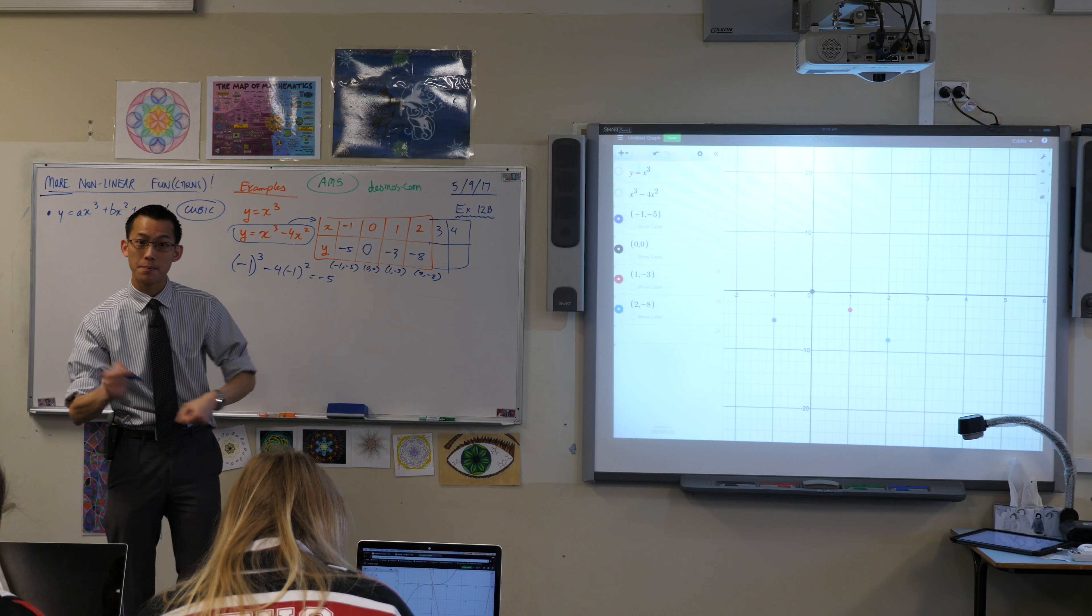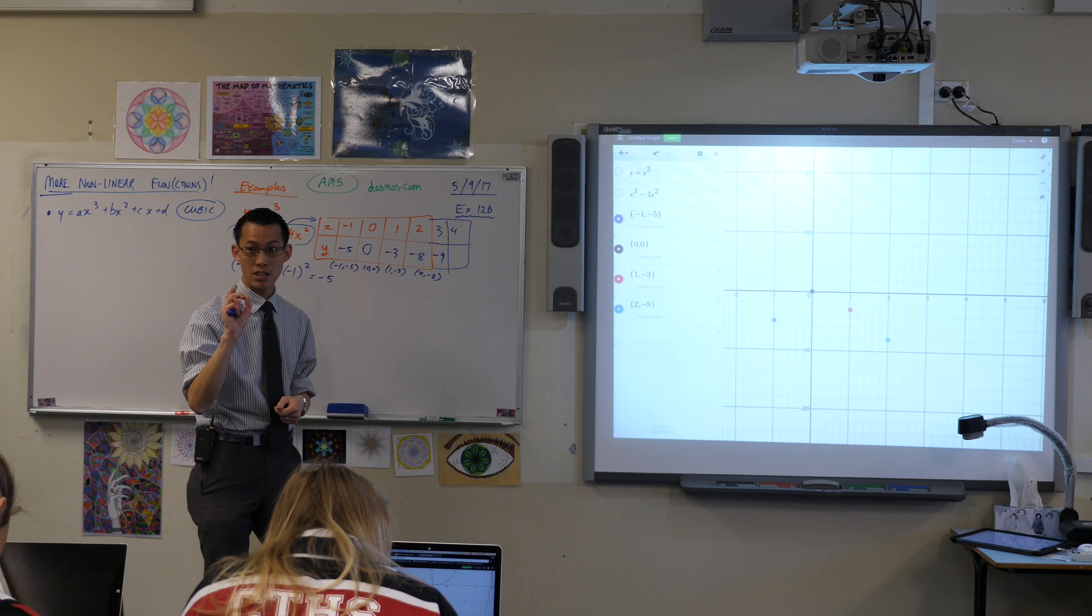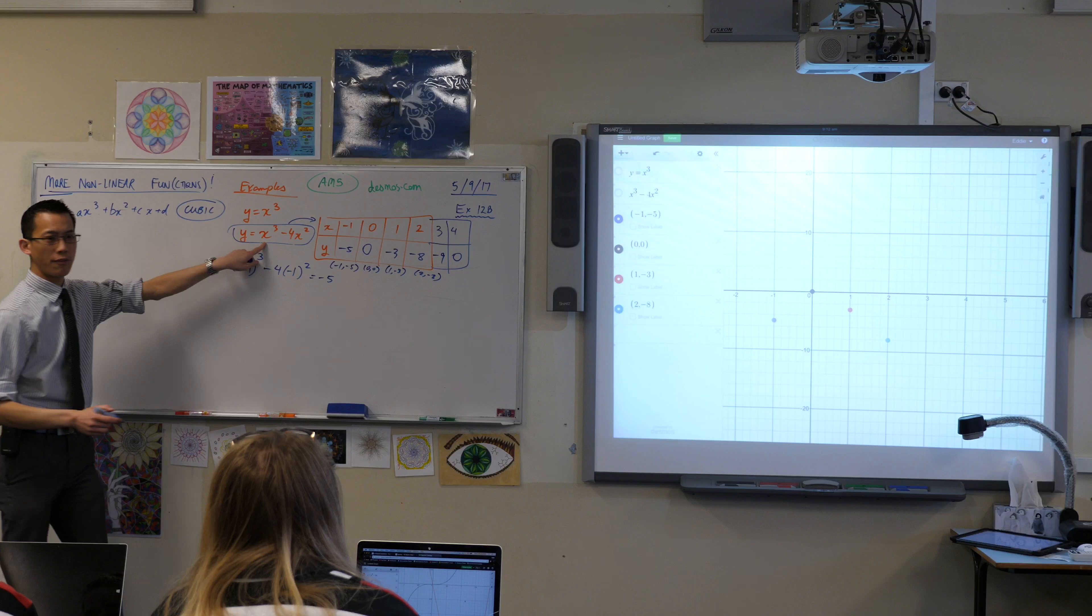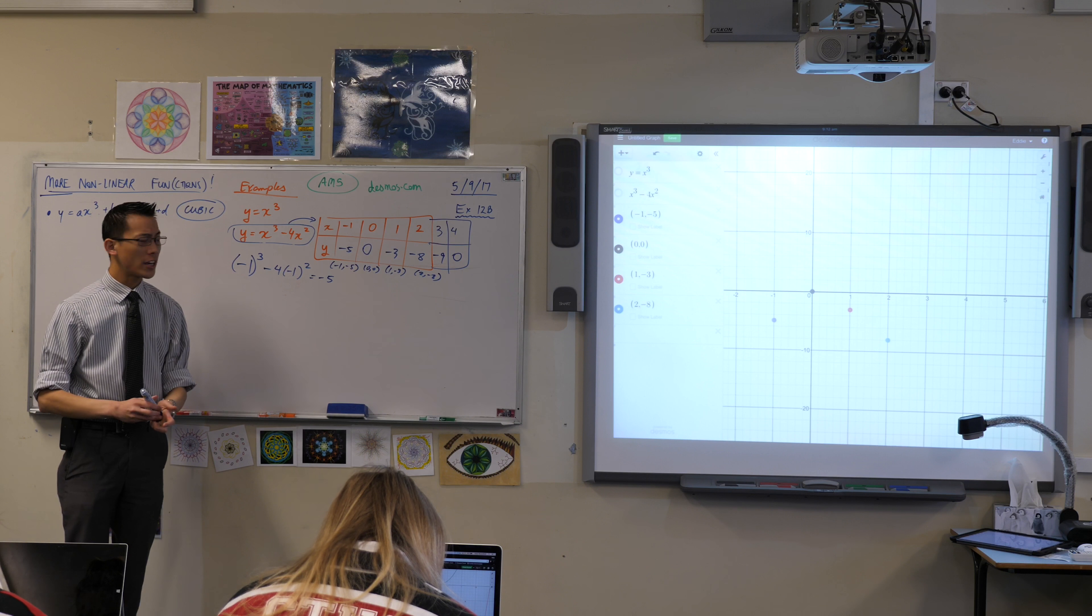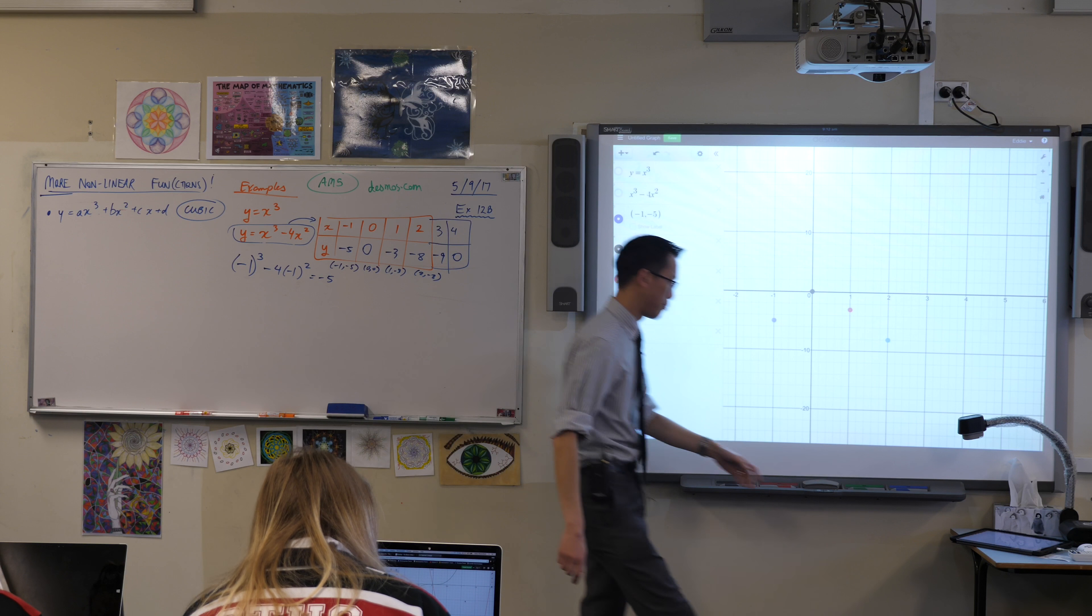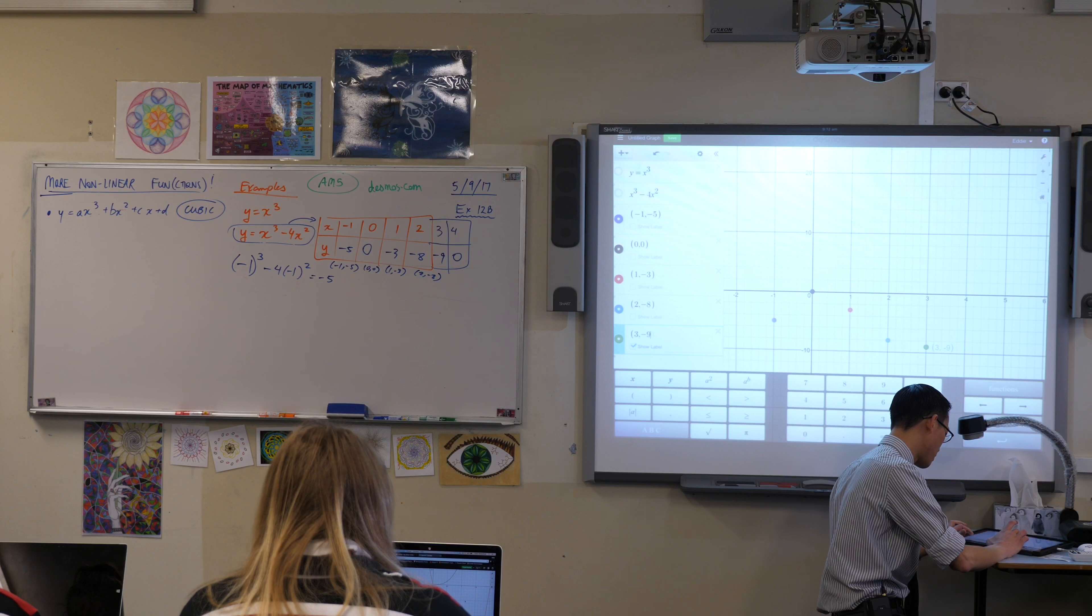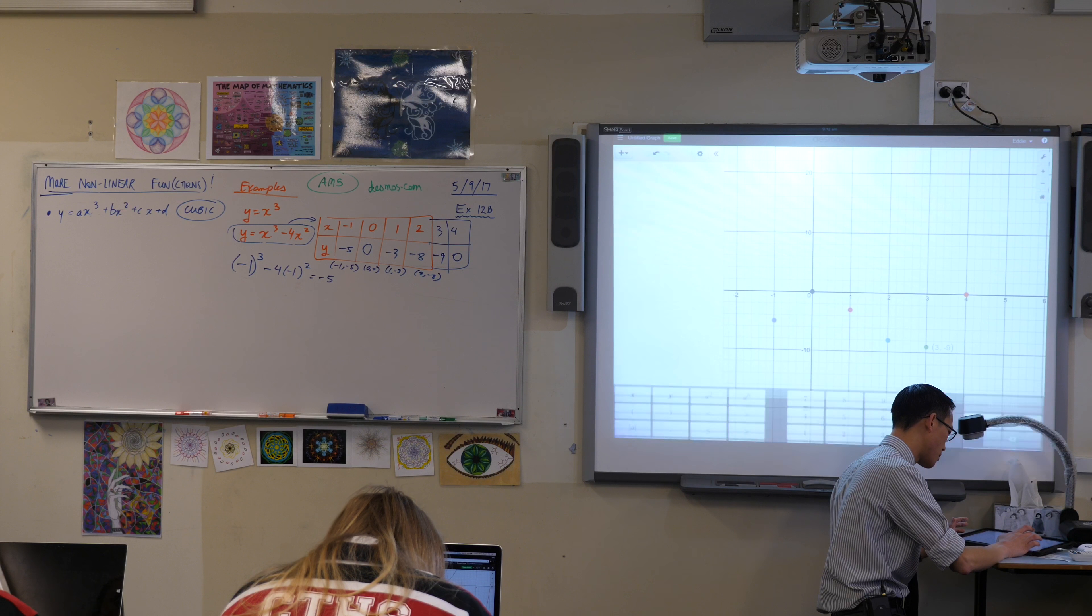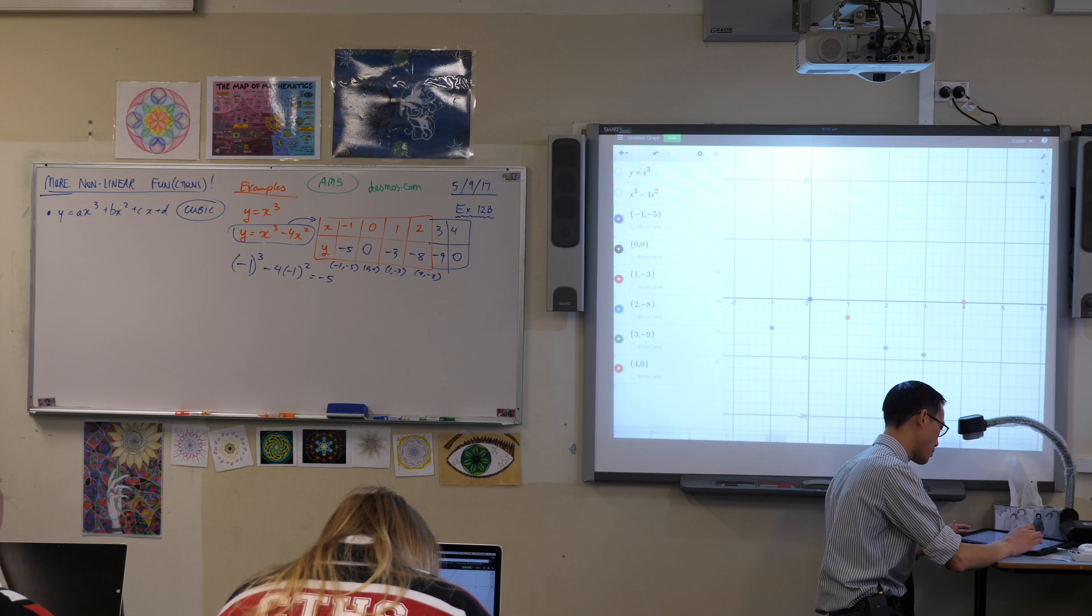Is anyone got a value for 3 yet? Minus 9? And the value for 4 should be 0. Have you got it? Did you get 0? Which shouldn't surprise you, by the way, because look, 4 cubed and then here is 4 times 4 times 4, which is 4 cubed. So we can put these guys on as well. 3, negative 9 and 4, 0. Let's plot those on as well.